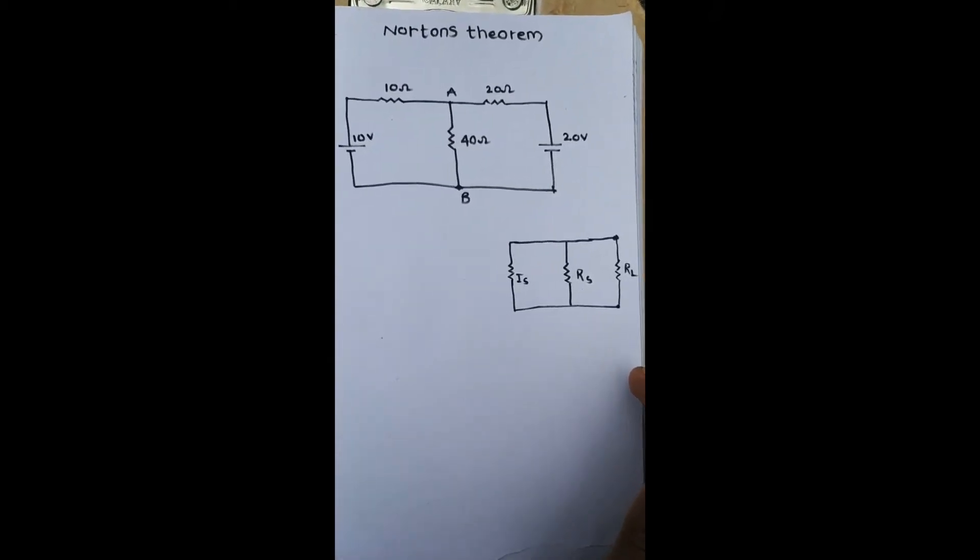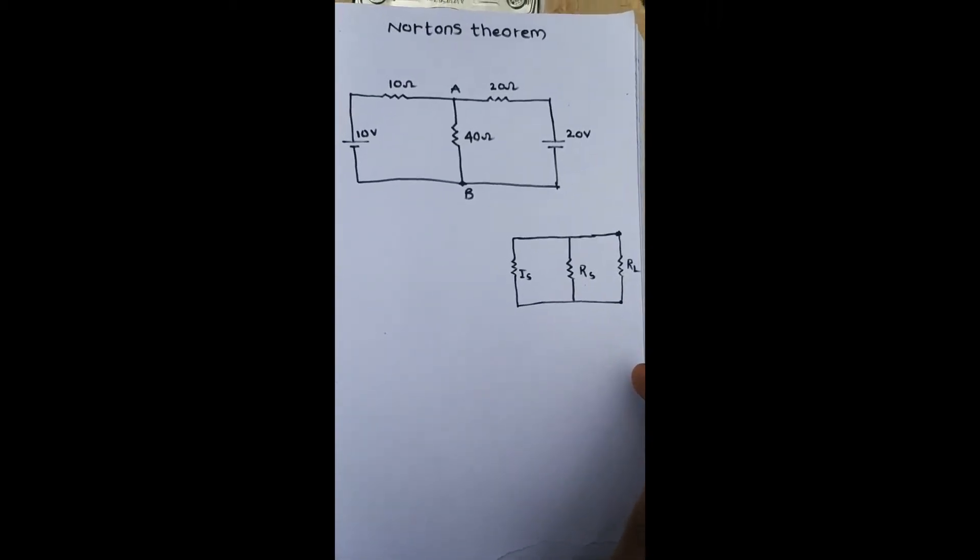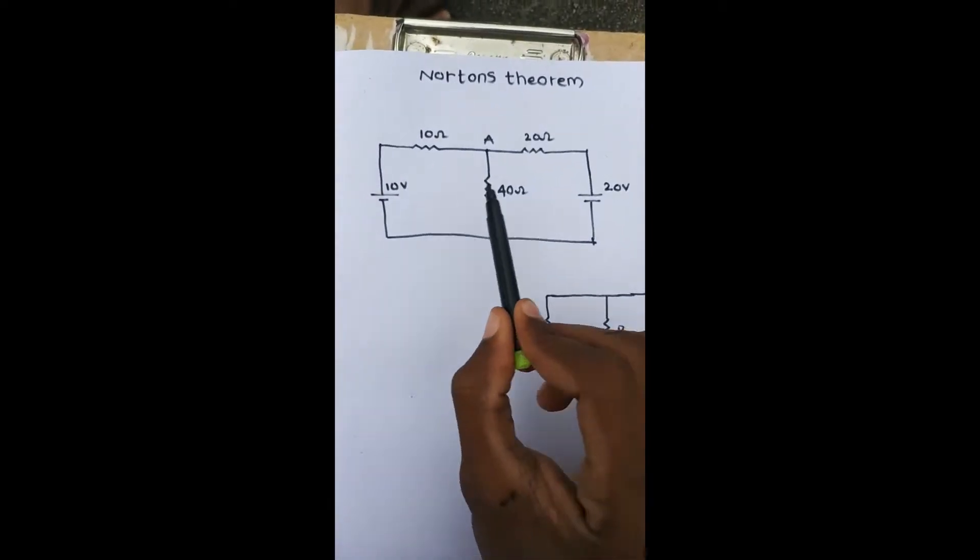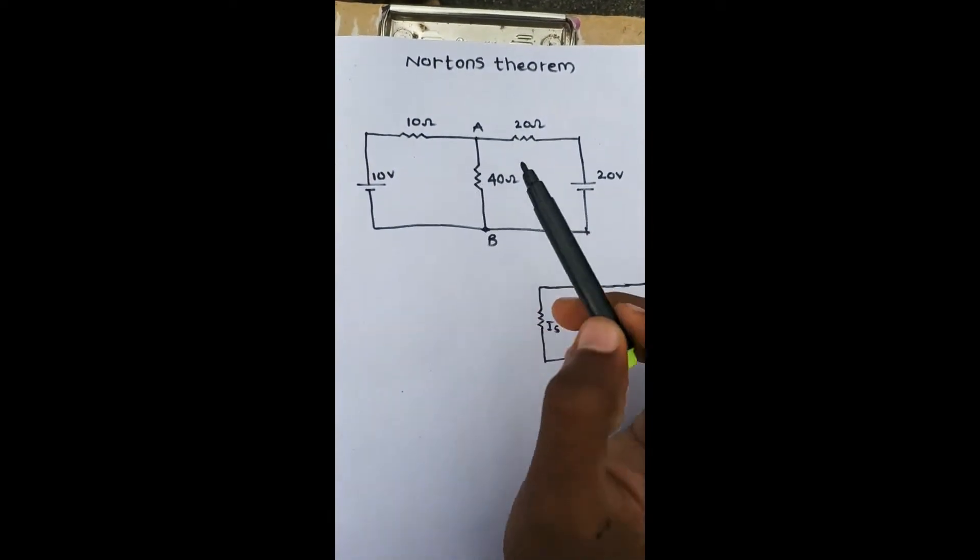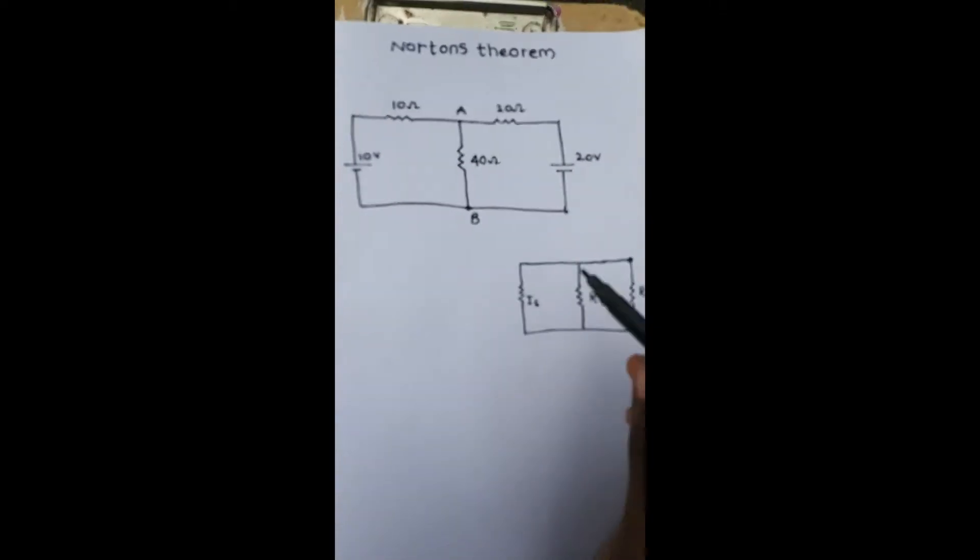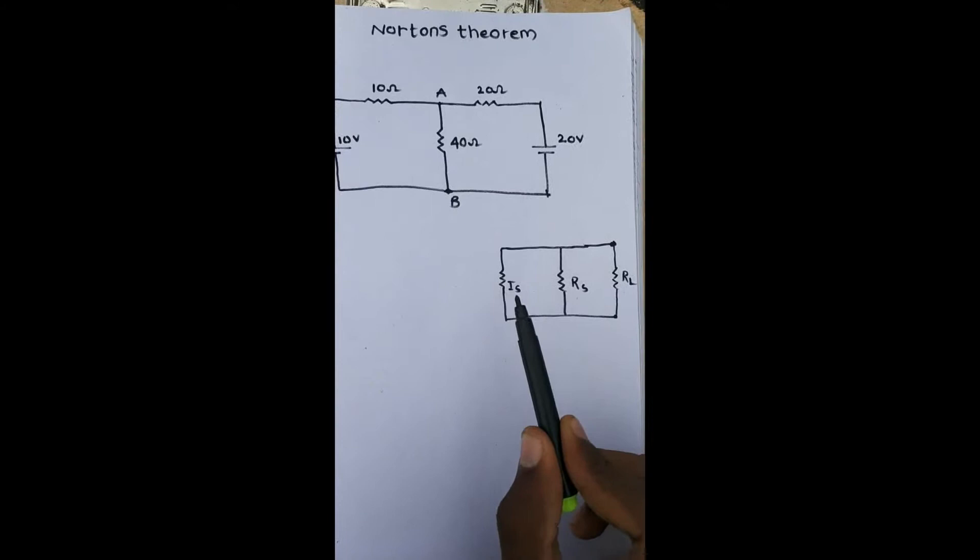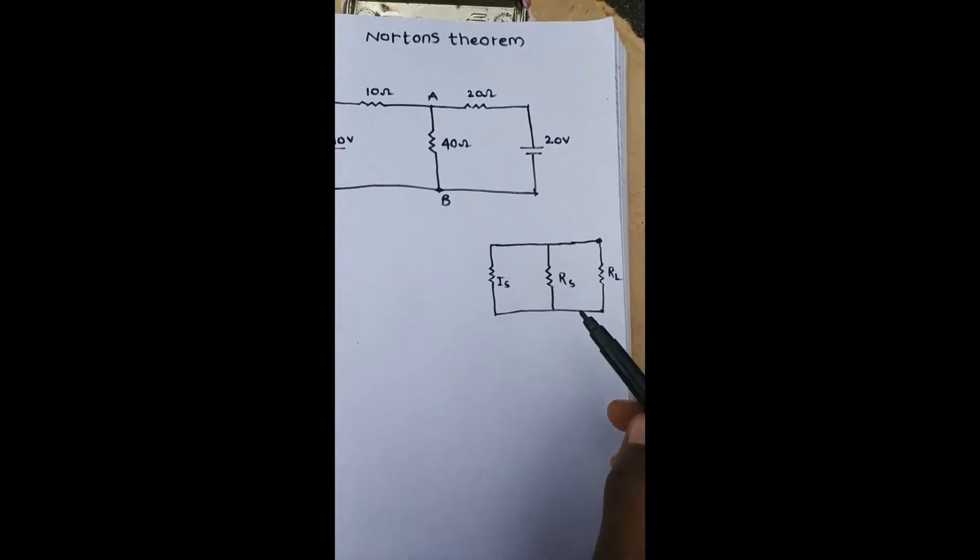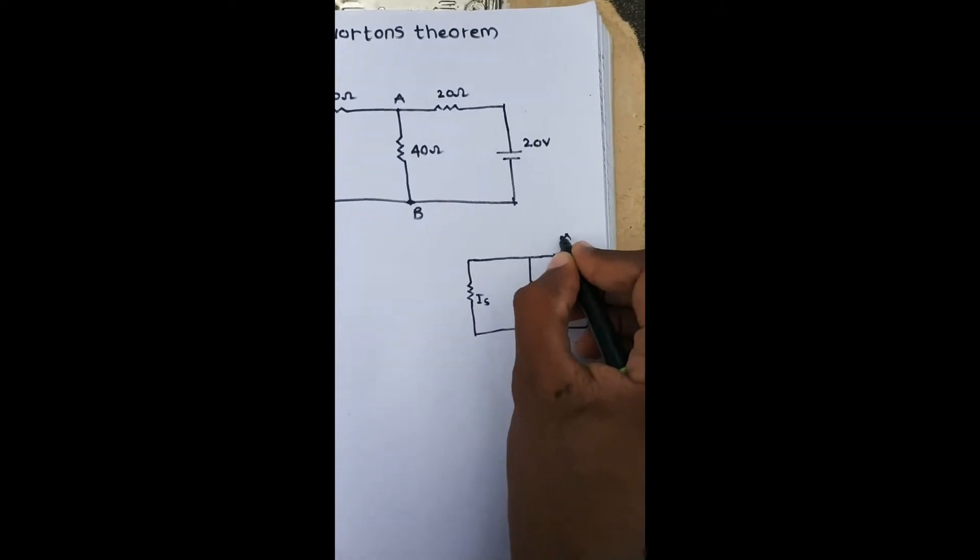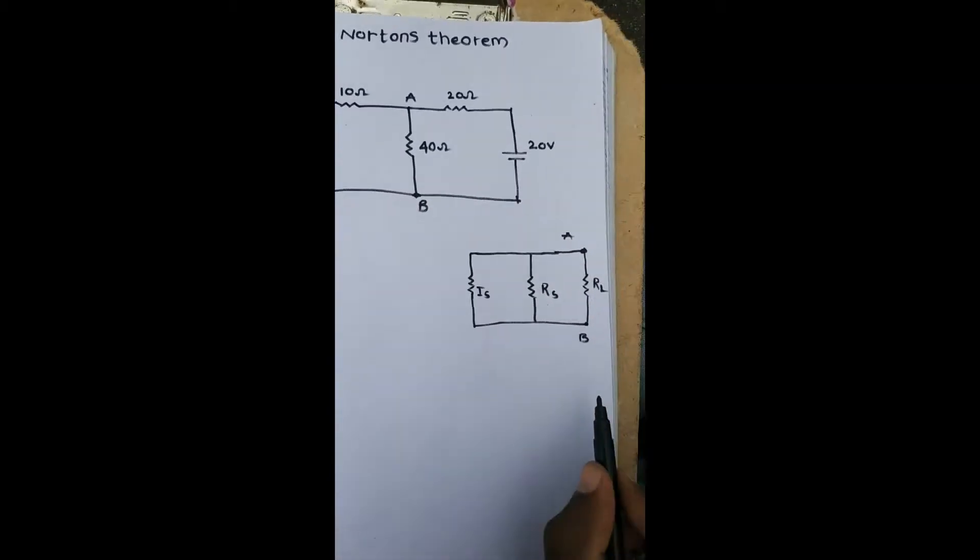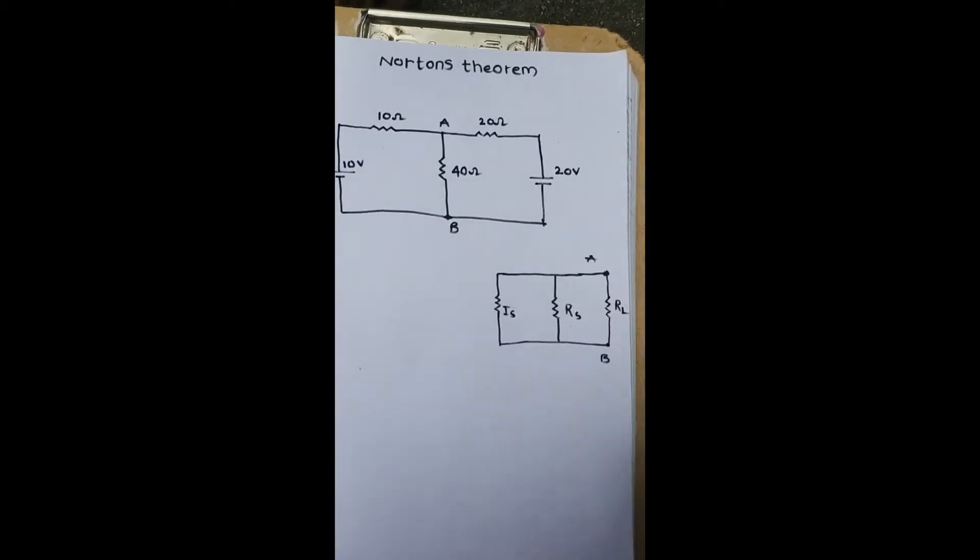Hello guys, welcome to our channel with Smoke Official. Today our topic is about Norton's theorem. This is the circuit for Norton's theorem to find current through this circuit. Norton's theorem requires: first find the Is value, Rs value, and RL value already is that. AB means here 40 ohms is equal to RL. So first find the Is value, and then after find the Rs value.